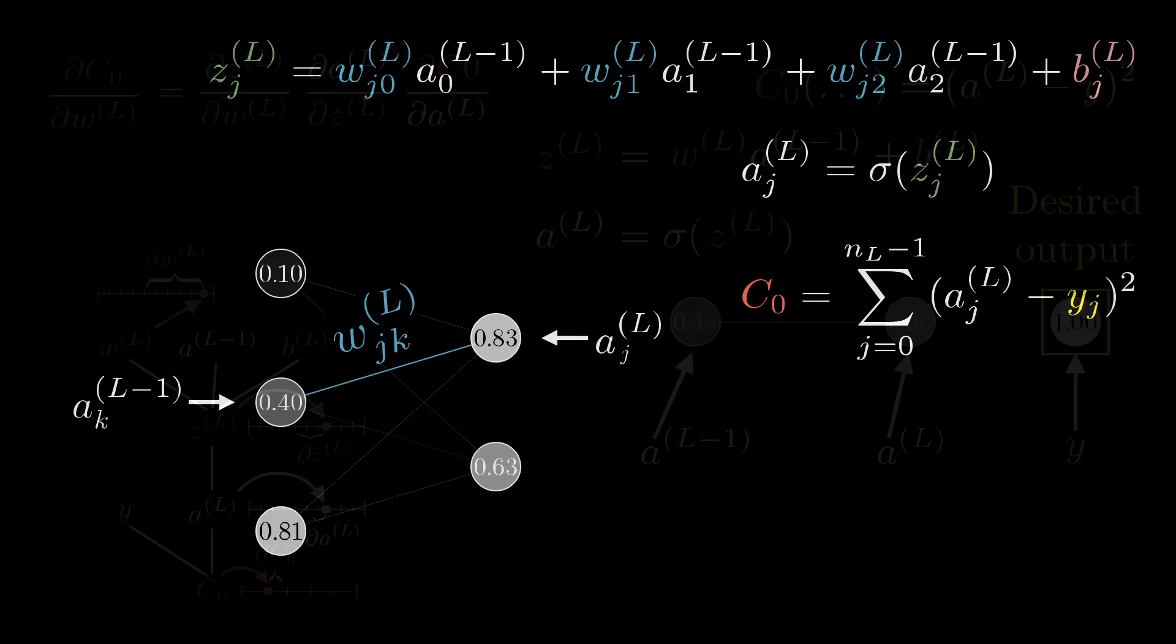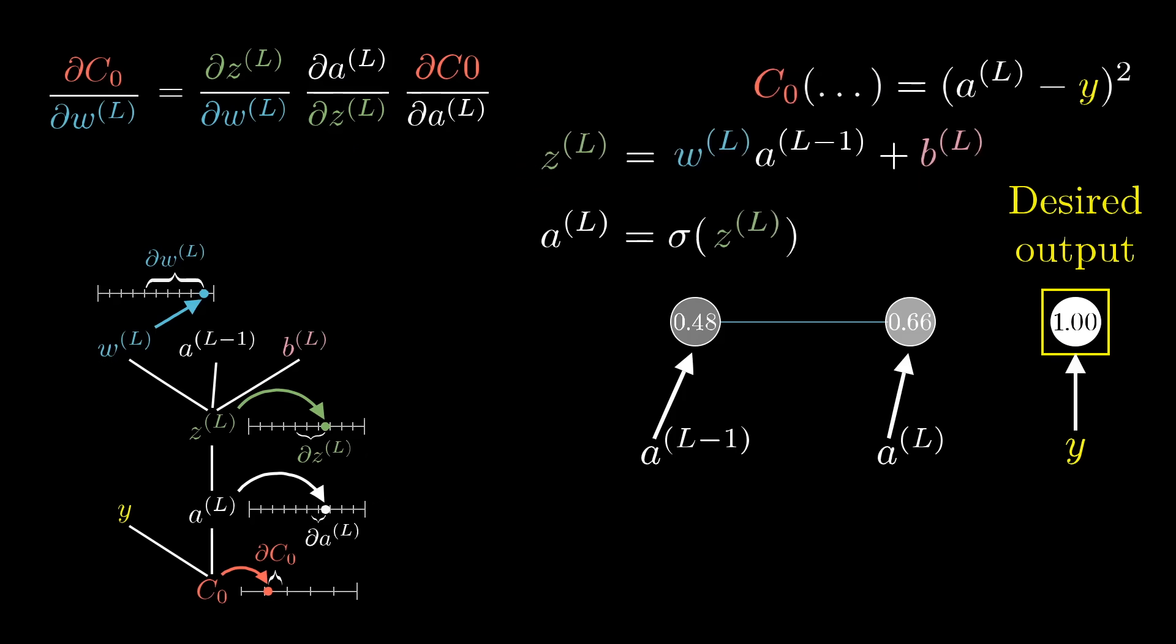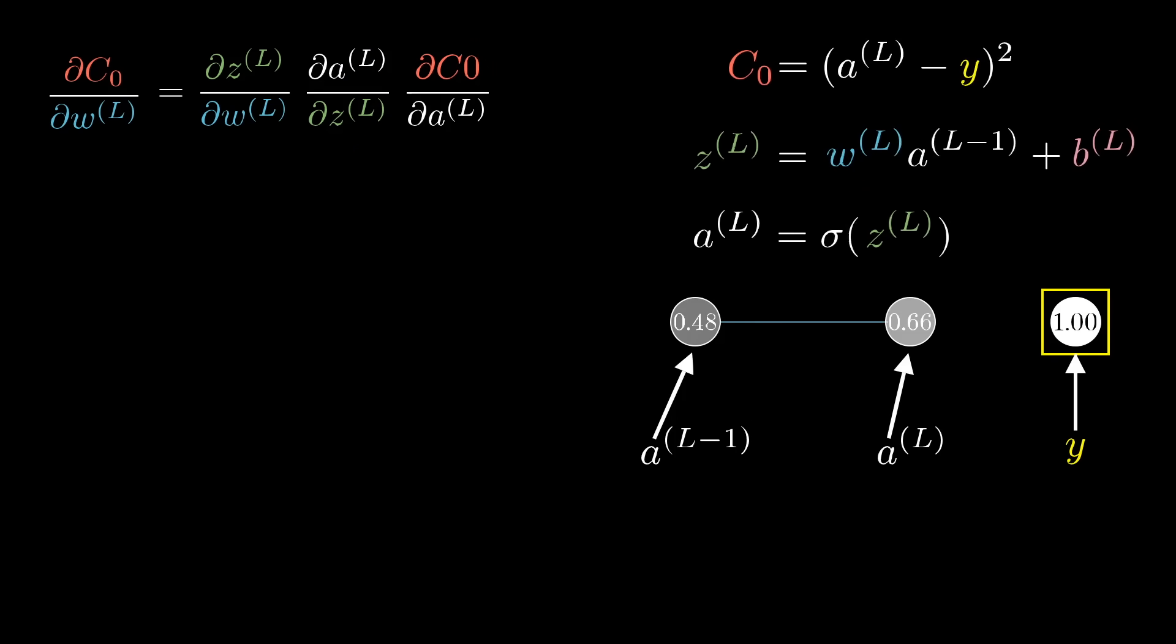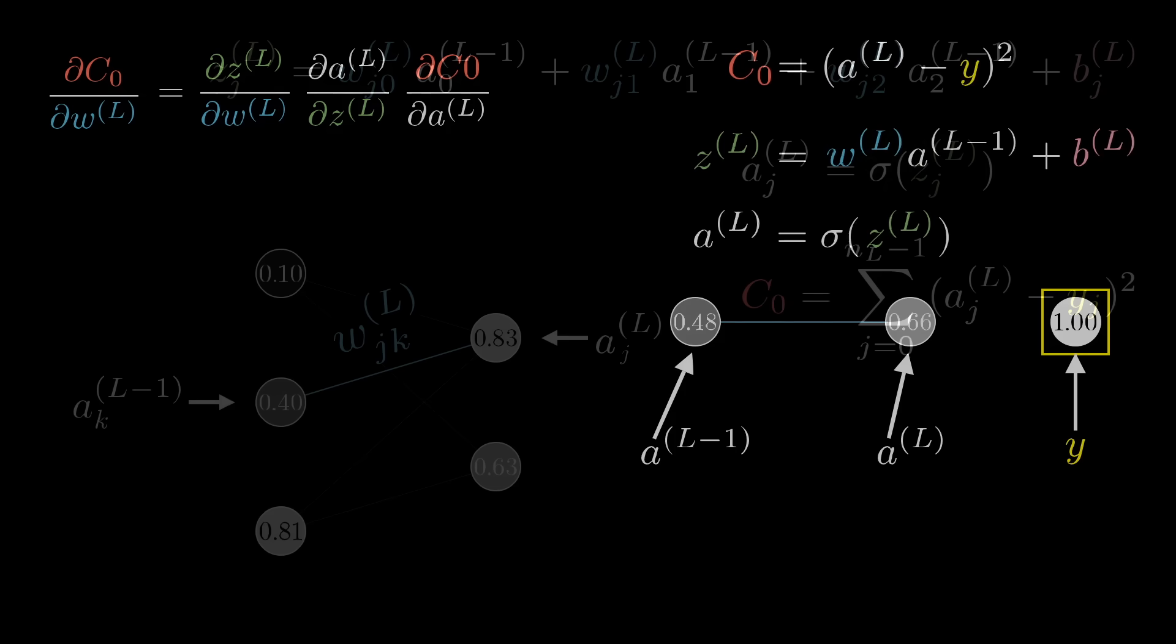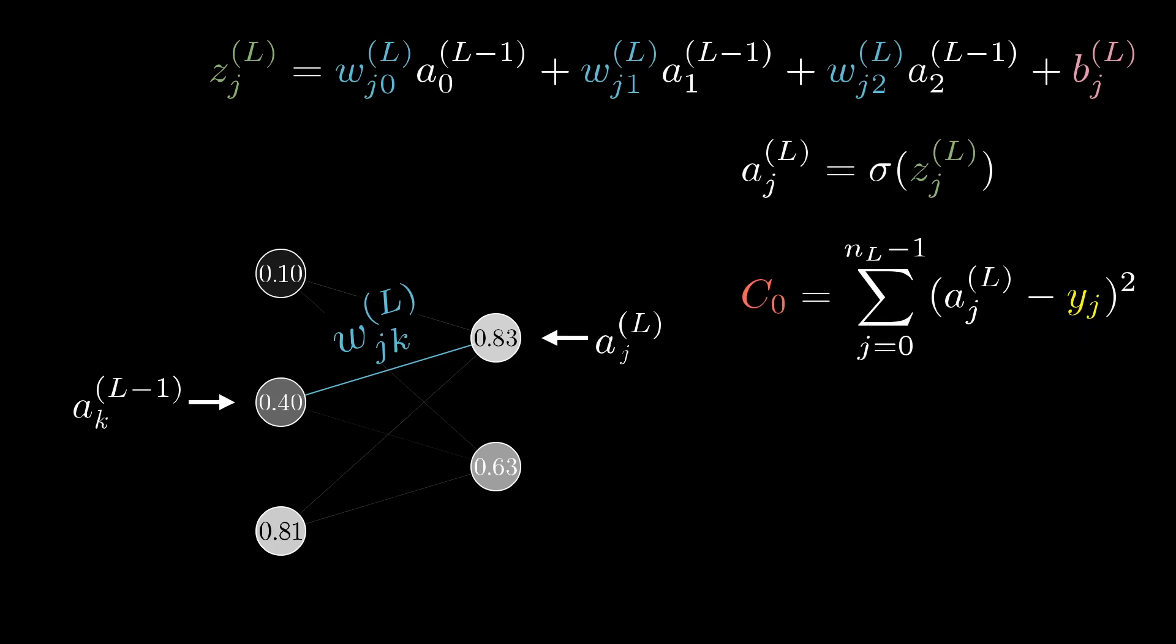You can kind of see what I mean, right? Where all of these are essentially the same equations that we had before in the one neuron per layer case, it's just that it looks a little more complicated.